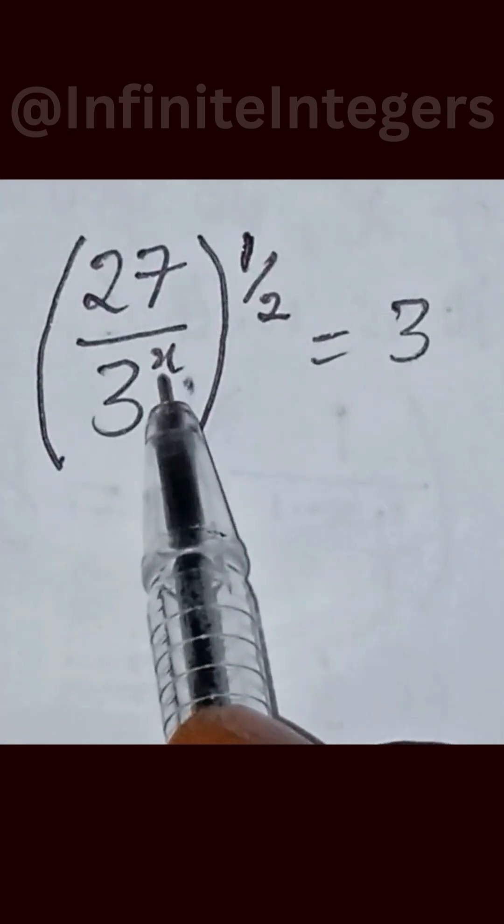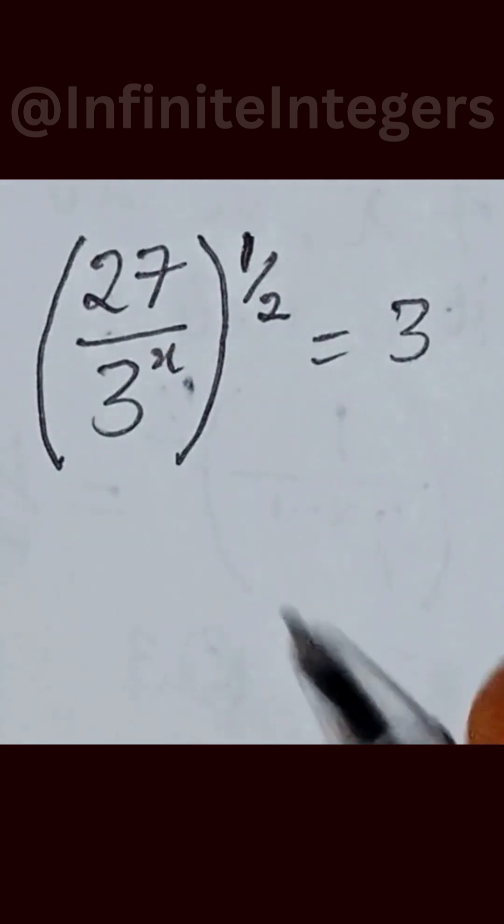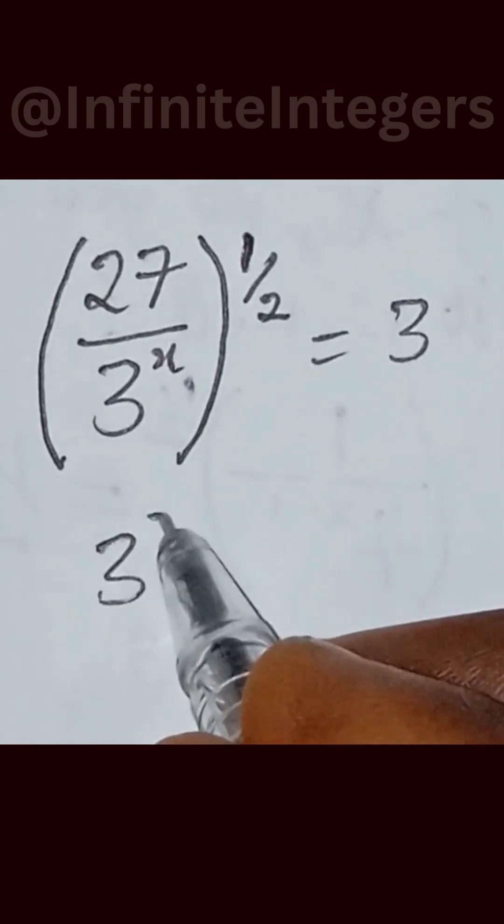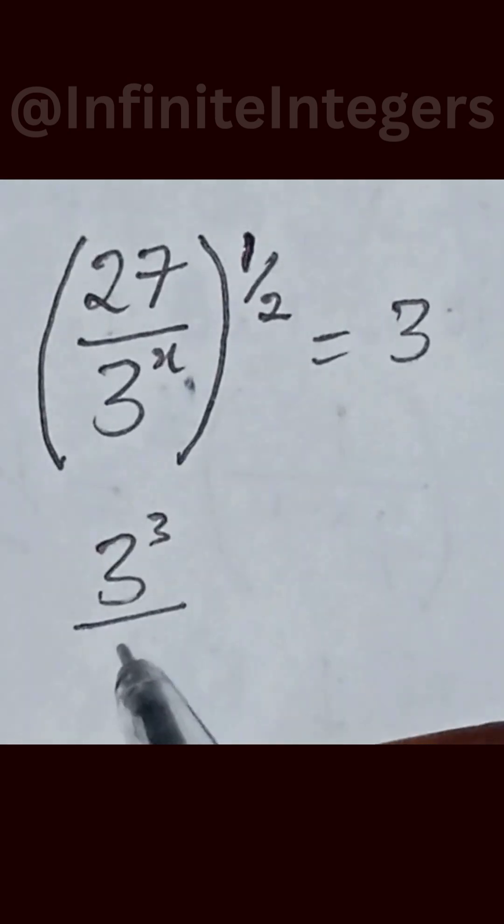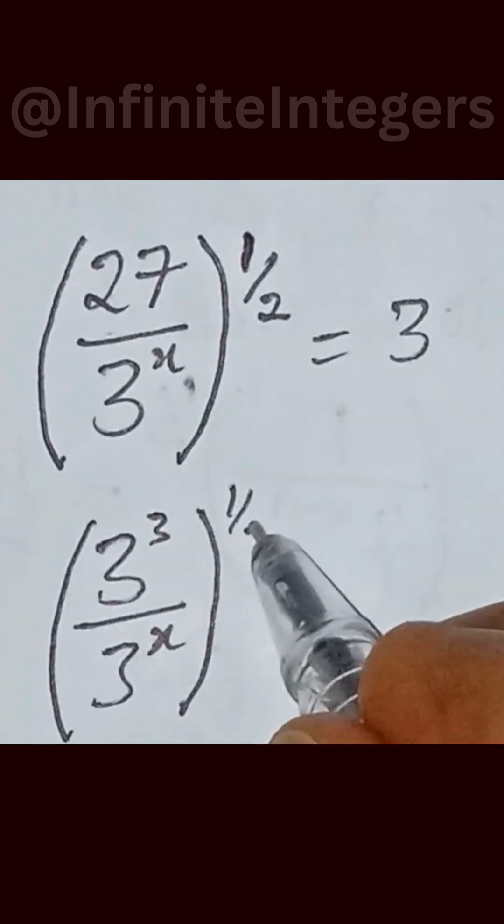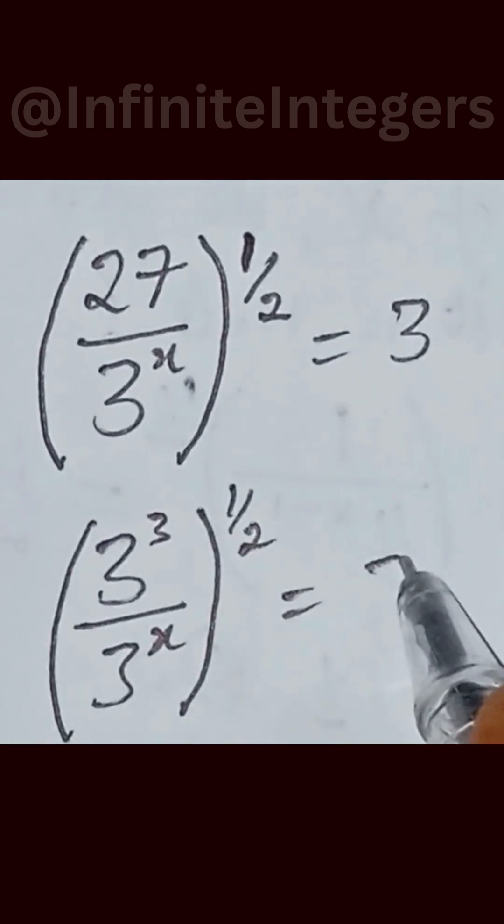To solve for this x, what you need to do is simplify this expression. We have 3 raised to the power 3 over 3 raised to the power x into bracket raised to the power half equal to 3.